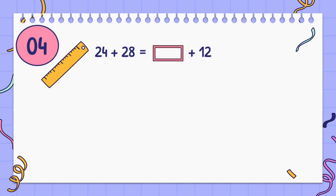24 plus 28 is equal to blank plus 12. Answer: 40.